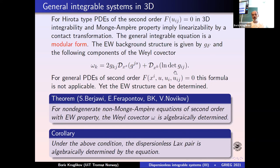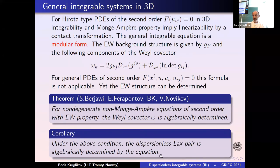Combining these results gives the following: under the above conditions, the dispersional Lax pair is algebraically determined by the equation itself. This is something which is not true for solitonic or dispersive equations — for those you need some kind of integration process to get the Lax pair or zero-curvature representation. Here it's much simpler: you just extract the Lax pair algebraically from geometry.